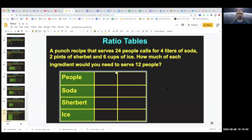All right. So let's try one more like this. This one is straight out of the book, and it's a little bit harder, but I think we can do it. So it says a punch recipe, punch is like fruit punch, you don't get a drink, that serves 24 people, calls for four liters of soda, two pints of sherbet, and six cups of ice. So let's see what we know so far. I'm going to go to the drawing. And so it serves 24 people. So here I'm going to put 24. And for 24 people, it uses four liters of soda. So soda gets a four. And two pints of sherbet, so I'll put a two here. And six cups of ice, right? So ice gets a six.